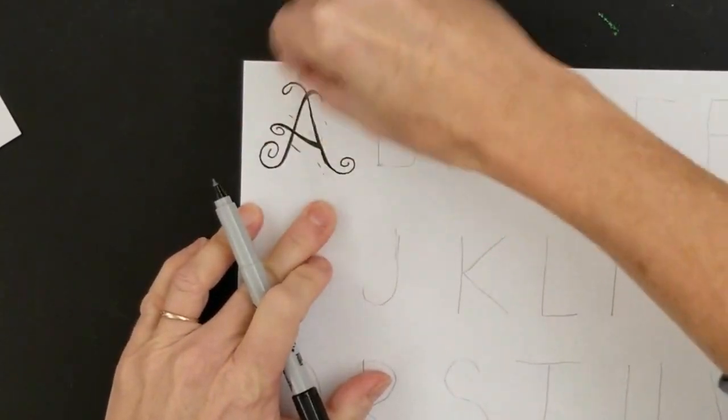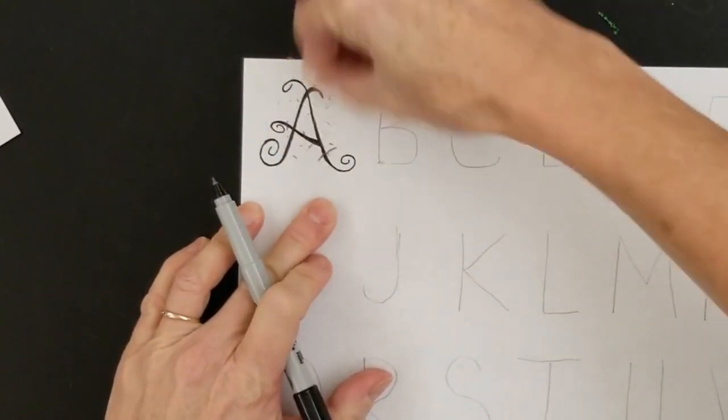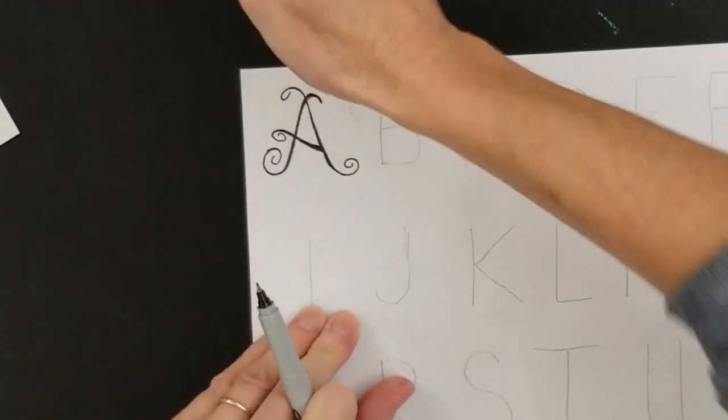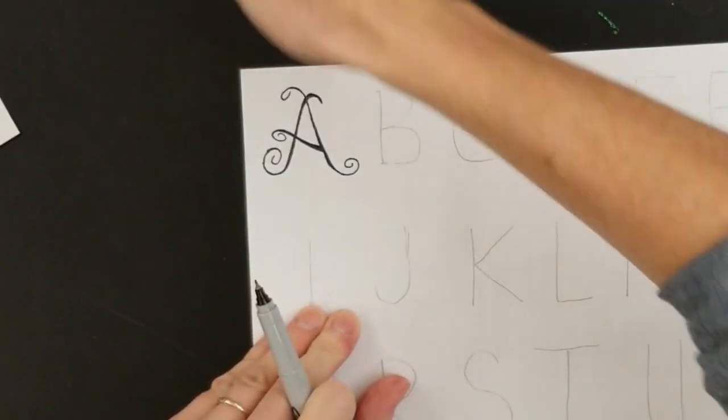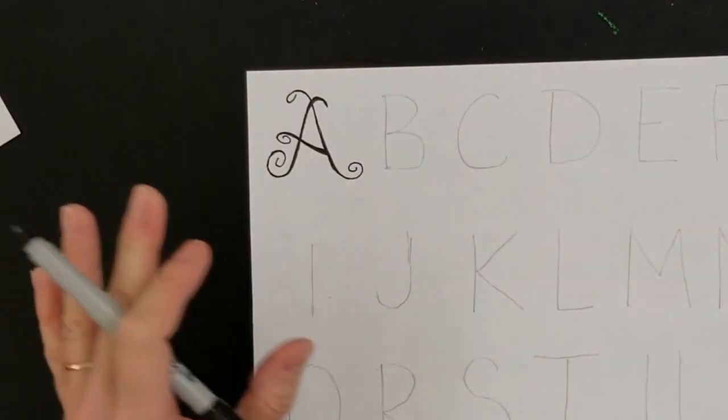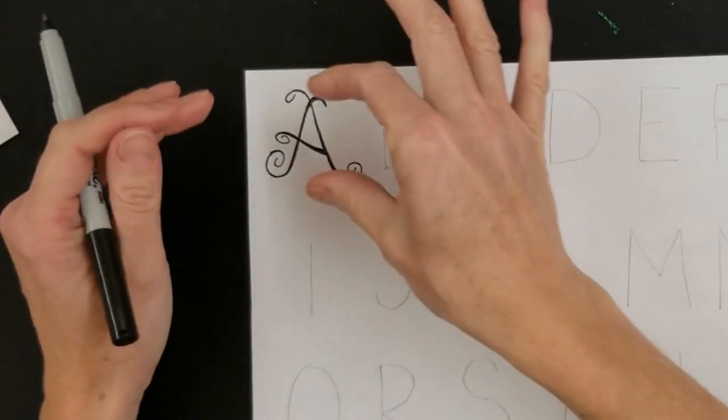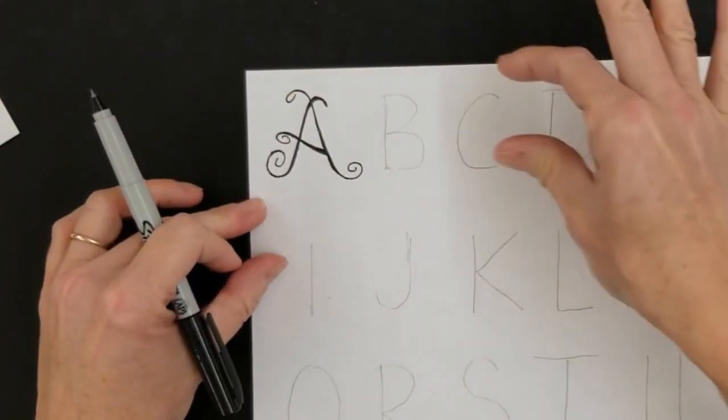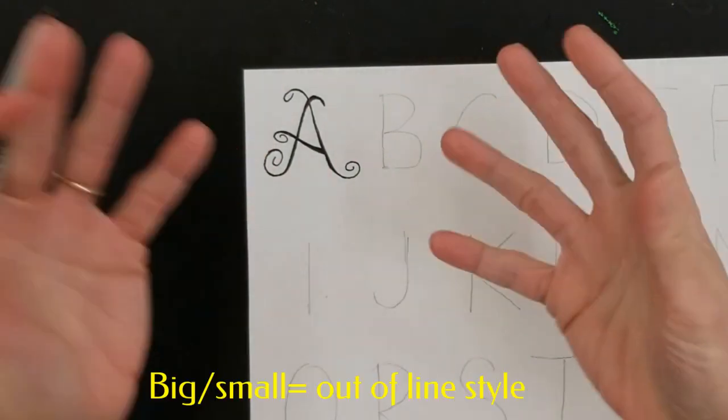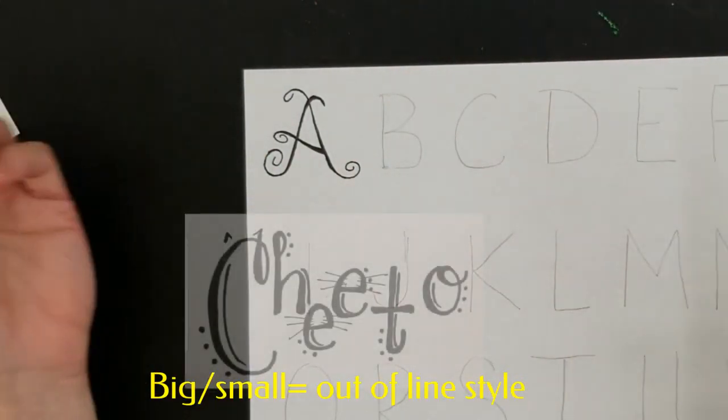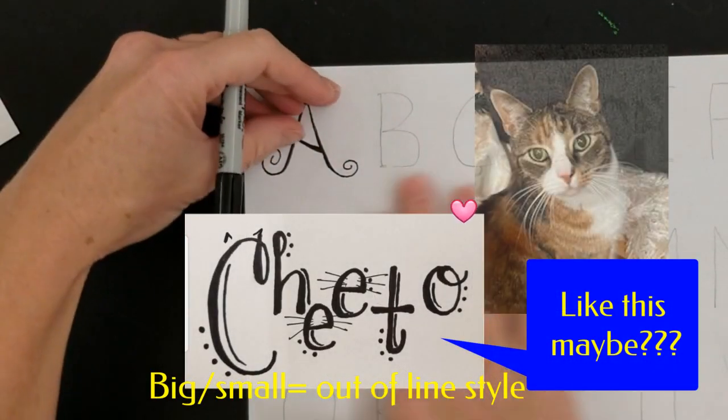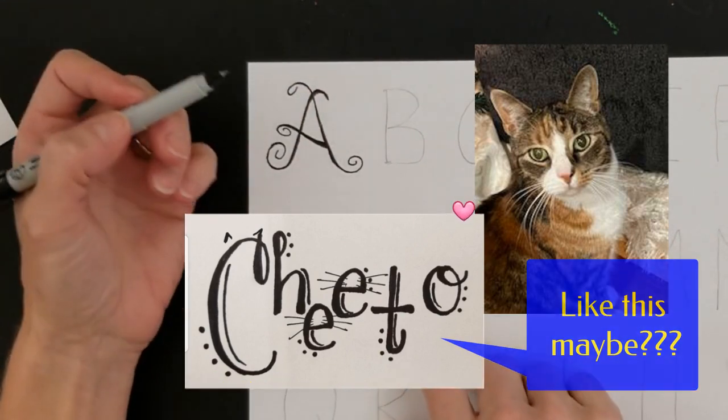And then when you're done you're just going to take your eraser and erase off that pencil underneath. One thing when you're lettering, you want to make sure if you're spelling words that you have the same size font as you go through. You don't want like a big and then a small unless that's the type of style that you're doing.